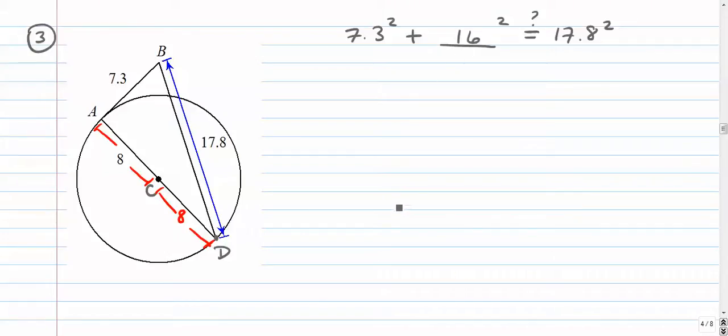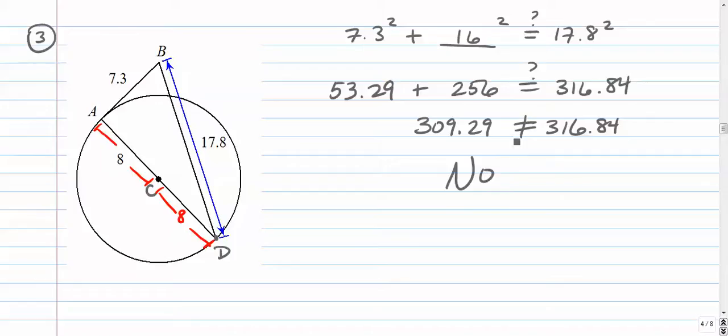If you need to use your calculators here, that's totally fine. We've got 53.29 plus 256. Does that equal 17.8², which is 316.84? And if I add these together, I can see again that it's not true. 256 plus 53.29, that's going to be 309.29. That does not equal 316.84. So again, this answer is no. If ever this turns out true, then the answer would be yes. So that means that this angle is something other than 90 degrees.